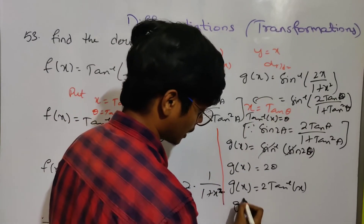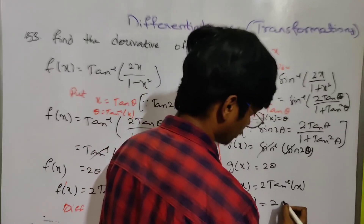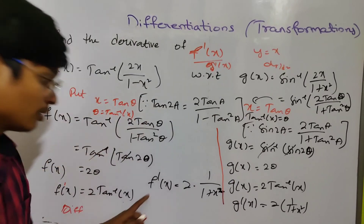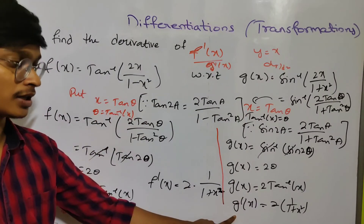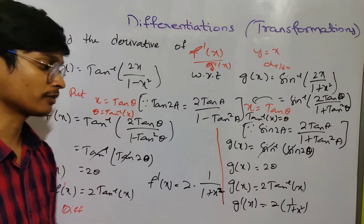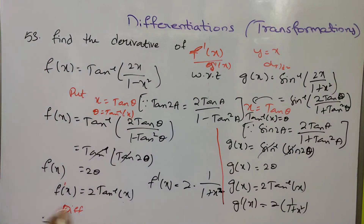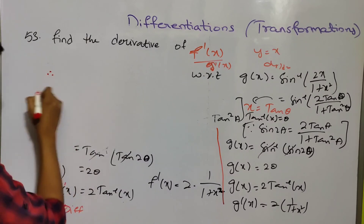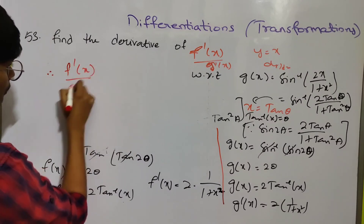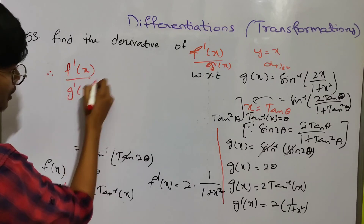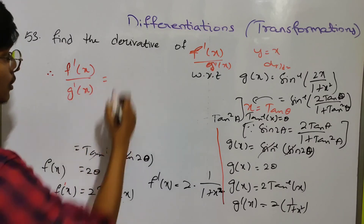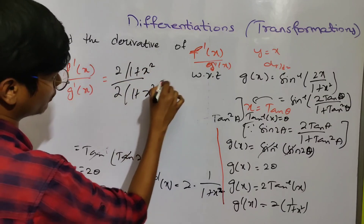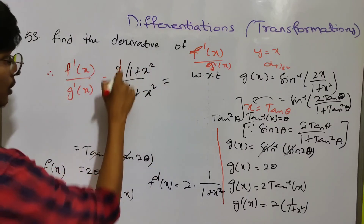g'(x) equals 2 into 1 by 1 plus x squared. Now we compute f'(x) by g'(x), which is 2 by 1 plus x squared divided by 2 by 1 plus x squared. That equals 1.